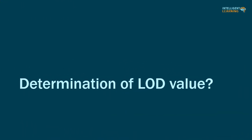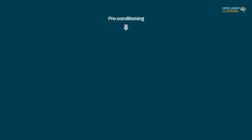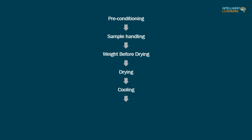How to determine LOD value? LOD determination involves seven steps: preconditioning, sample handling, weight before drying, drying of specimen, cooling, weight after drying, and calculation.